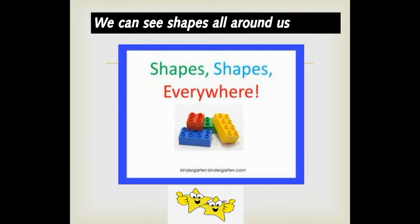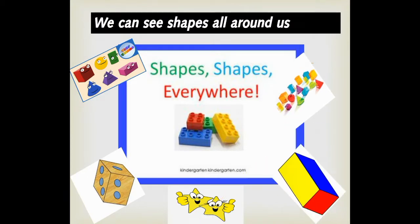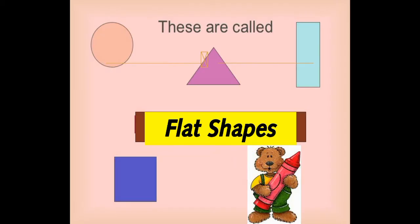We can see shapes all around us. Shapes, shapes everywhere. It means that if you look around yourself you can see many shapes. In the previous two lessons I told you about the circle, triangle, rectangle and square. These are called flat shapes.